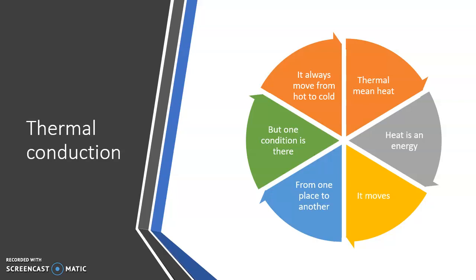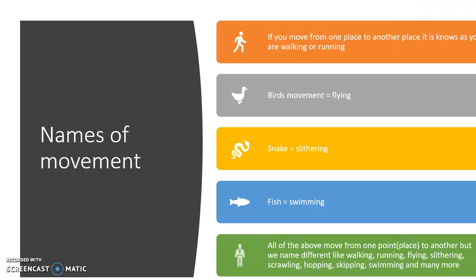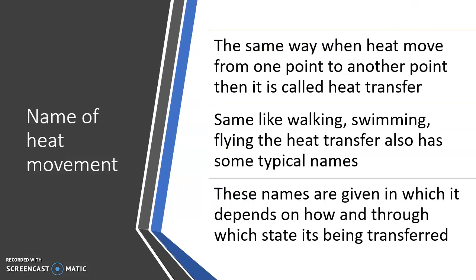Before we discuss further, we should know some basic concepts. We know the three states of matter: solid, liquid, and gas. We also know names for different types of movement — walking, running, flying, slithering, swimming, hopping, skipping, and many more. Similarly, the names for heat energy movement are: conduction, convection, and radiation.